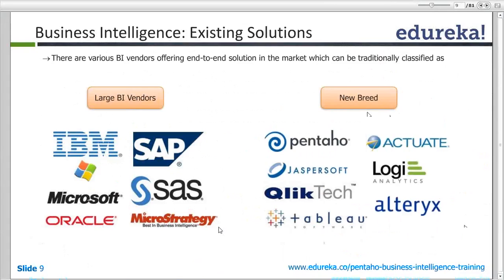Here it shows the different BI solutions available in the market. There are proprietary tools from big vendors like IBM, Microsoft, Oracle, and there are newer players doing pretty well, like Pentaho and Jaspersoft, which is basically open source.